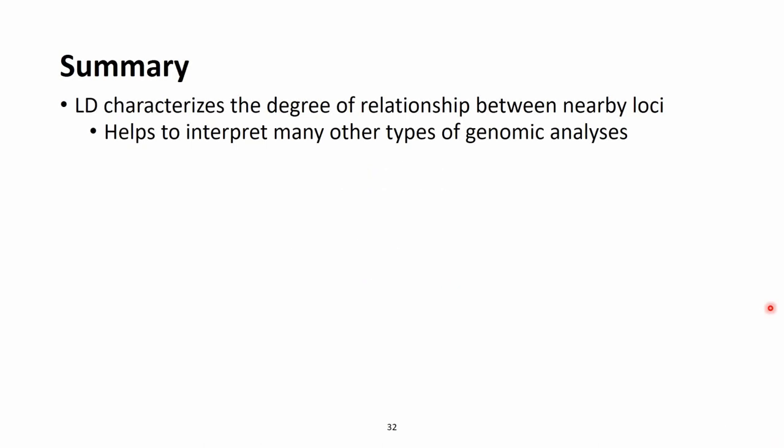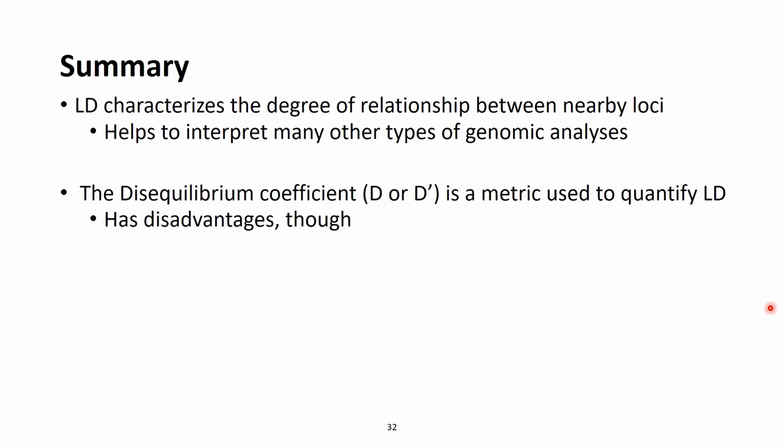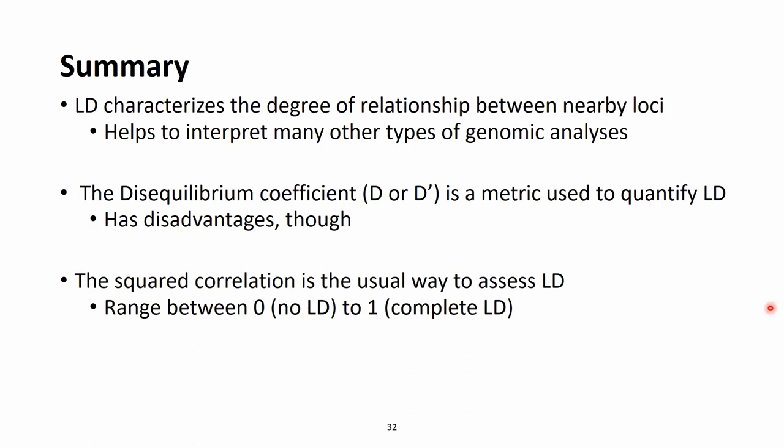We talked about linkage disequilibrium (LD), which characterizes the degree of relationship between nearby loci and helps interpret many types of genomic analysis. LD can be expressed as the disequilibrium coefficient D or D', but these have certain disadvantages. A better way to express LD is the squared correlation coefficient r², where zero means no LD and one means complete LD — if you see the genotype at one locus, you can exactly tell the genotype at the other.